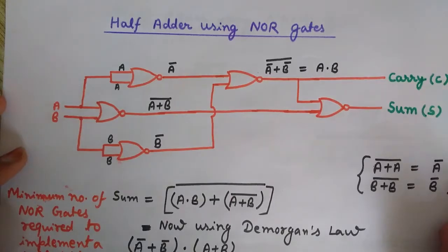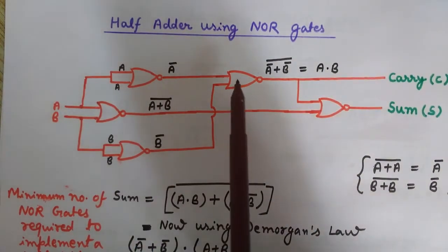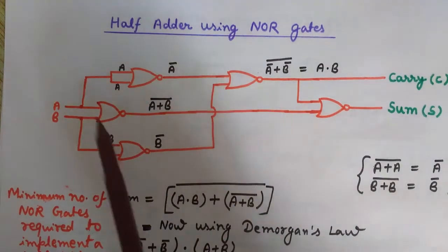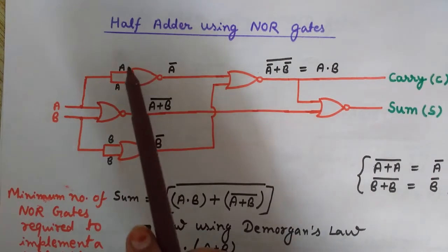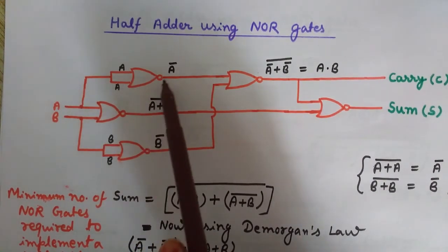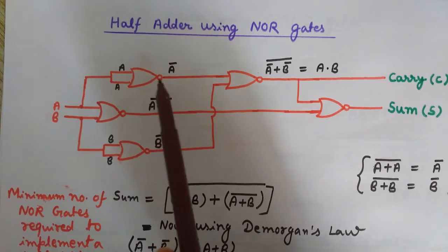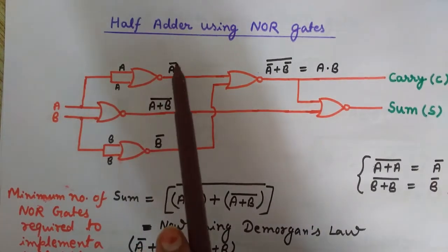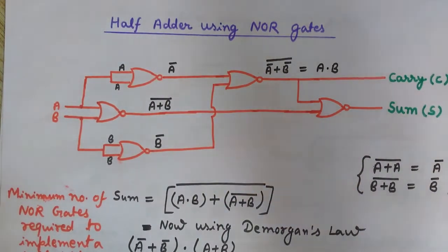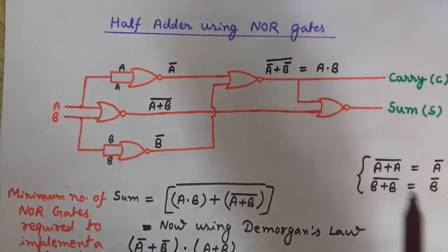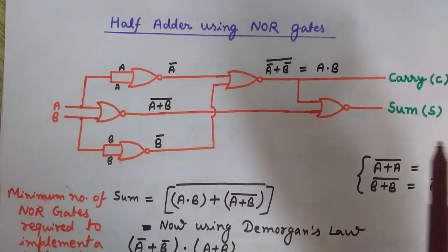Watch carefully — here you can see we have used five gates: one, two, three, four, and five — five NOR gates. NOR gate means NOT-OR. This is the symbol for the OR gate, and the small circle represents NOT, so this whole symbol denotes the NOR gate. Its function is: it does the OR operation and complements it. We can design the whole half adder's expression using these NOR gates only. Minimum five NOR gates are required to completely implement a half adder.